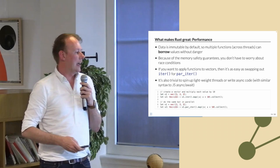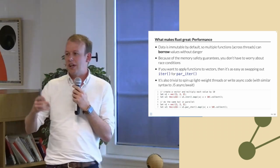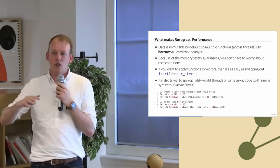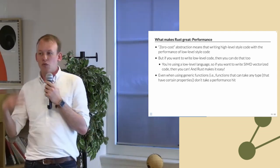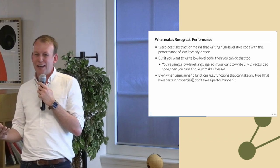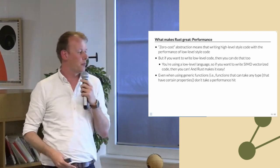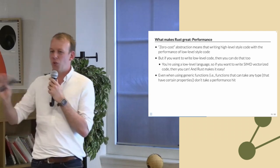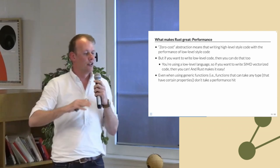Rust also ships with functions in the standard library for spinning up lightweight threads, similar to Go routines, and JavaScript-style async/await for async code. Writing parallel, async, and high-performance code is super easy in Rust. With zero-cost abstractions you can write high-level code using iterators without taking a performance hit. If you want to write low-level code, you can too — SIMD, where a single instruction is processed in parallel across multiple data on a processor, is built into the standard library, portable across processor types, and super easy to use.